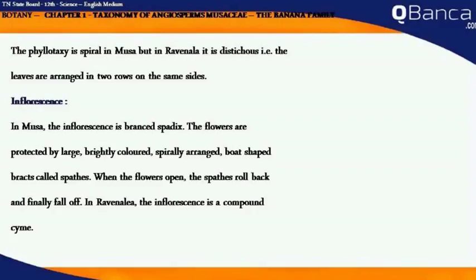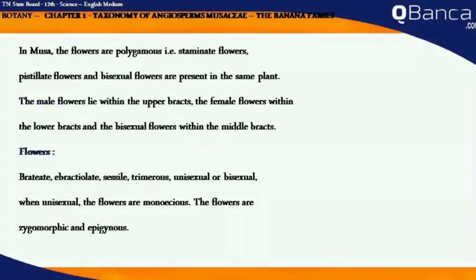In Ravenala, the inflorescence is a compound cyme. In Musa, the flowers are polygamous — that is, staminate flowers, pistillate flowers and bisexual flowers are present in the same plant. The male flowers lie within the upper bracts, the female flowers within the lower bracts, and the bisexual flowers within the middle bracts.